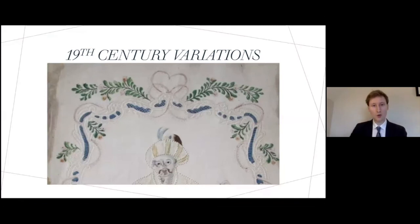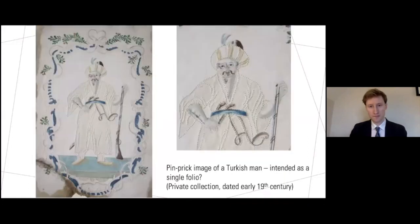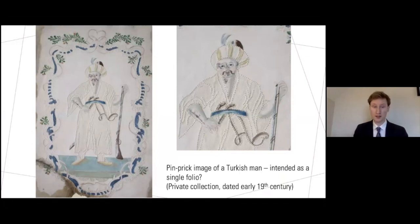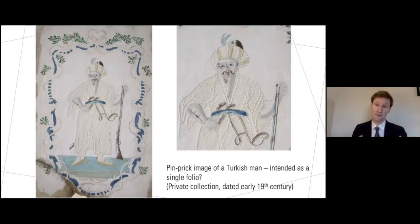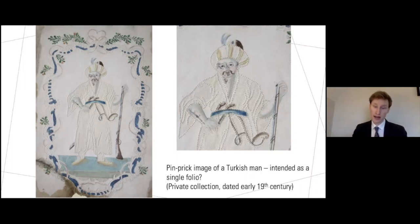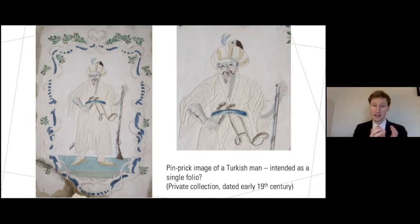I want to finish quickly with some 19th and early 20th century variations which touch upon some different themes. A different type of image found in the early and mid-19th century are these pinprick images. So far I've only come across these as separate folios — I don't know if they circulated in manuscript album form. They're on wonderfully thin, translucent paper, and their material property of being pinpricked also allows the light to shine through. I suspect these operated as individual folios to be circulated in this way rather than in an album.